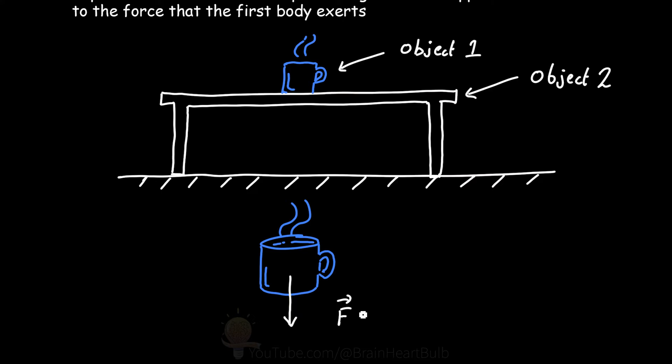According to classical physics, the Earth exerts a gravitational force on all objects, including our coffee mug here. This force is equal to the gravitational mass of the coffee mug multiplied by the acceleration due to gravity, which on the Earth's surface is around 9.8 meters per second squared.